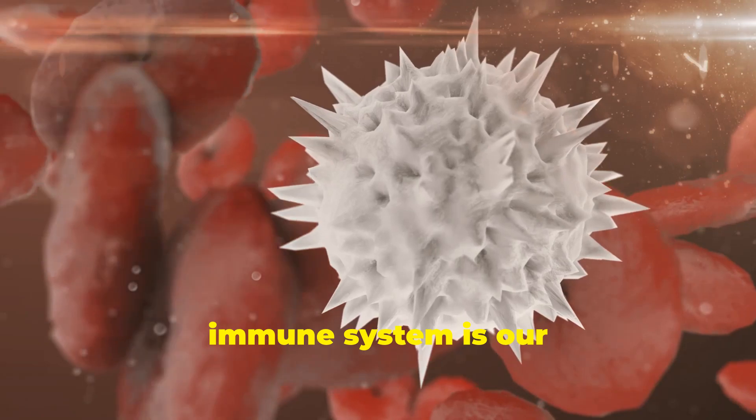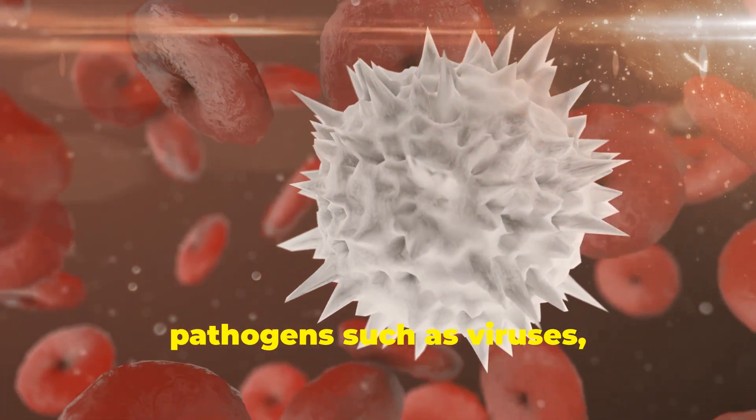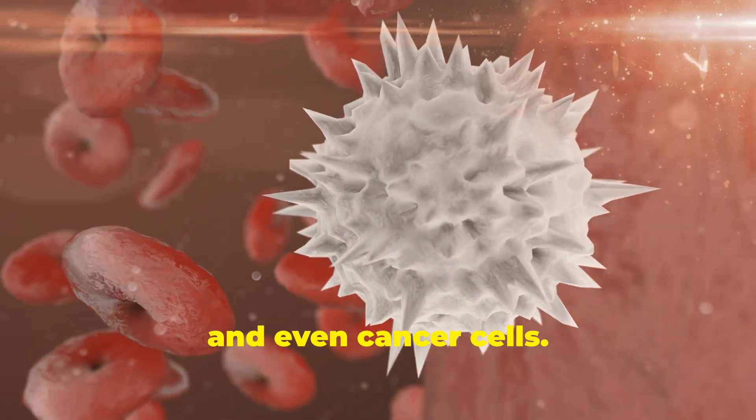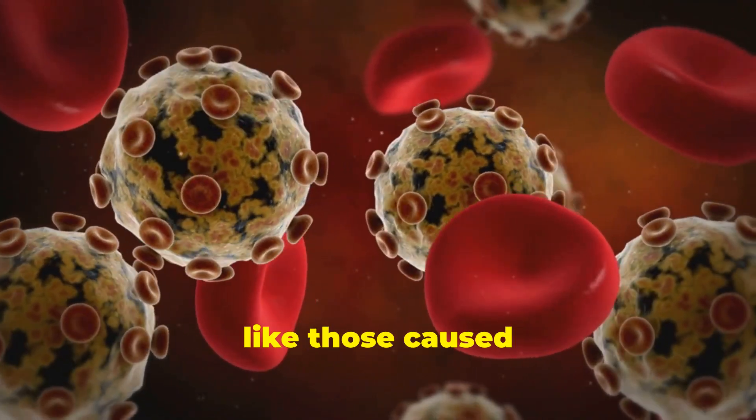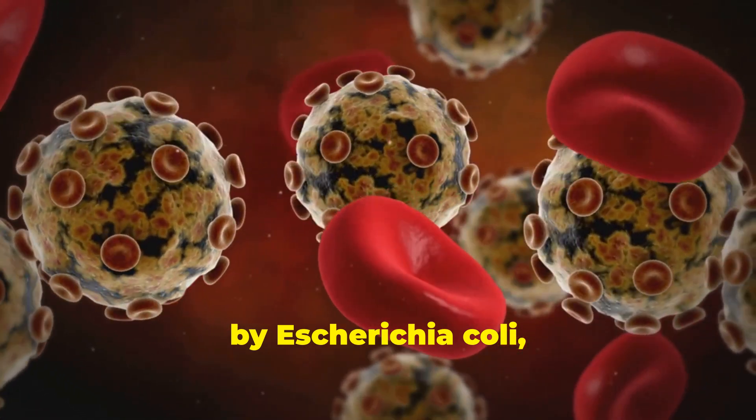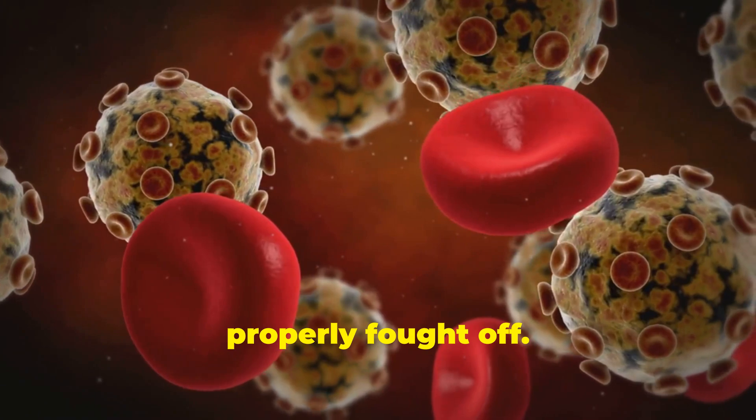The immune system is our body's first line of defence against pathogens such as viruses, bacteria, parasites and even cancer cells. Bacterial infections like those caused by Escherichia coli or Staphylococcus can lead to serious illnesses if not properly fought off.